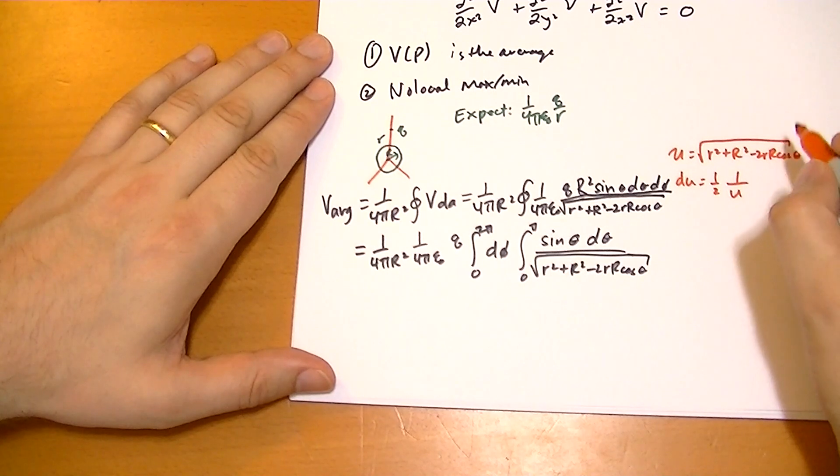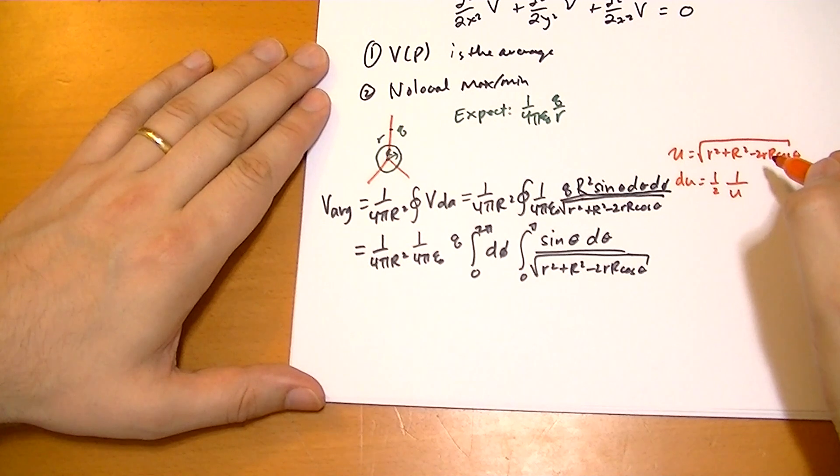Is there a negative sign there? There should be. So we have minus 2rR and the derivative of cos theta would be negative sine theta.